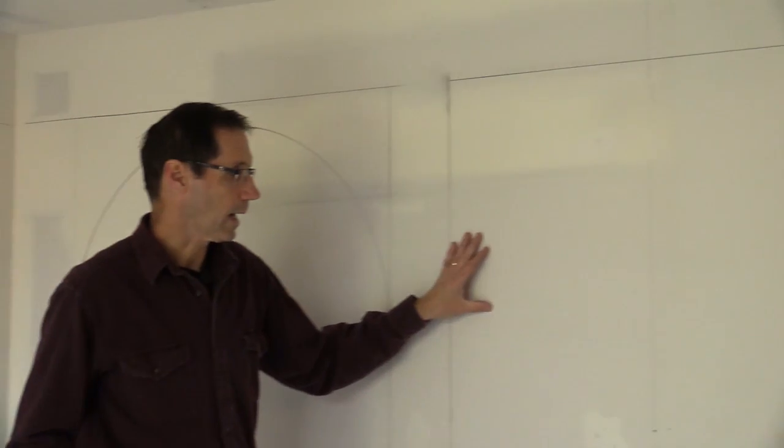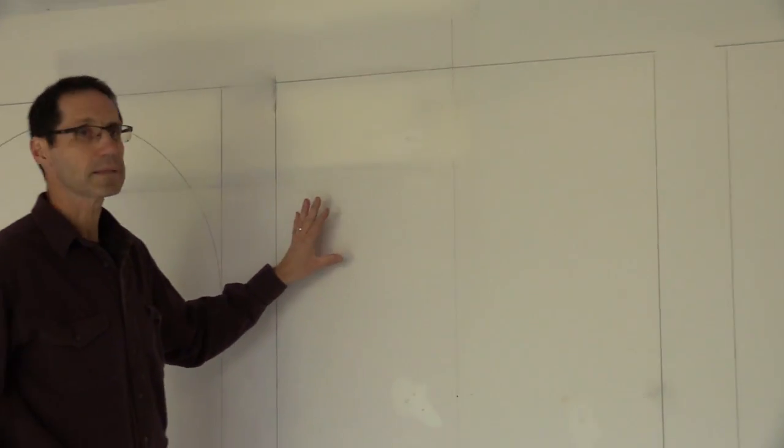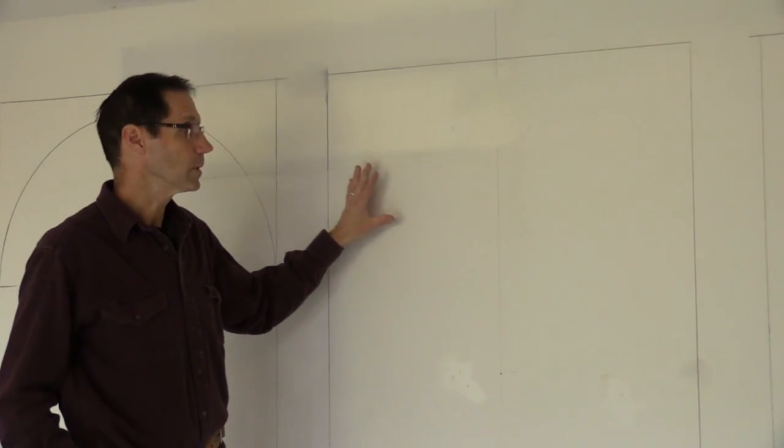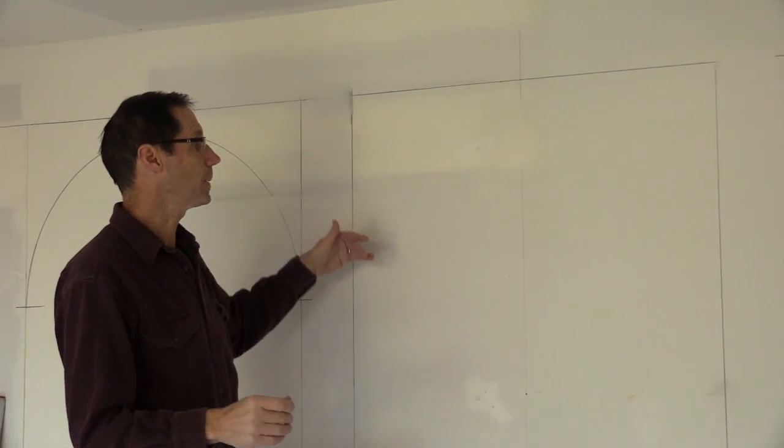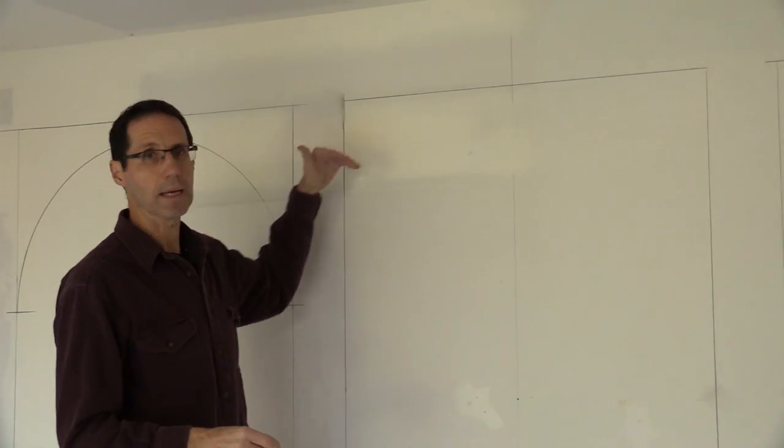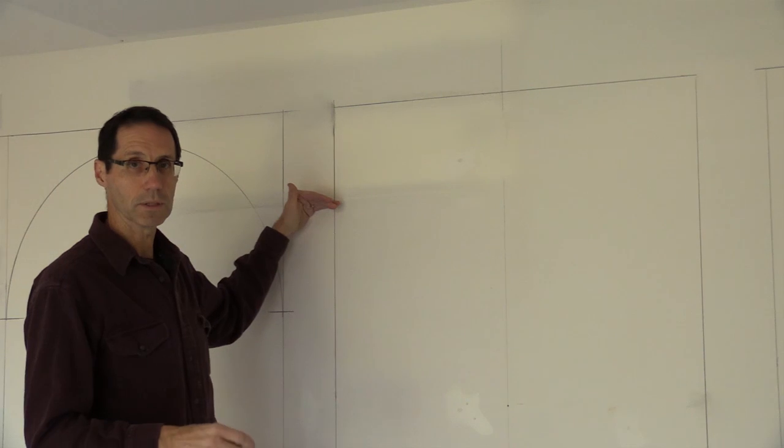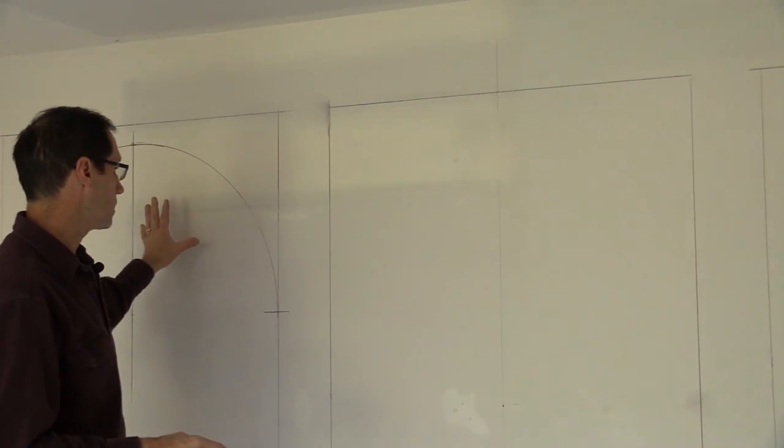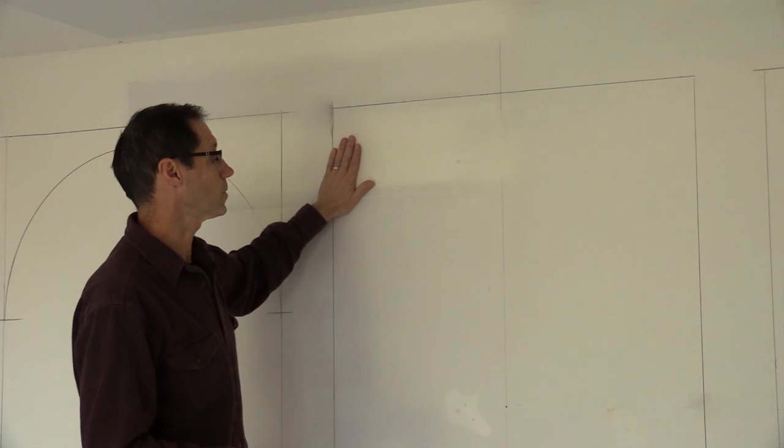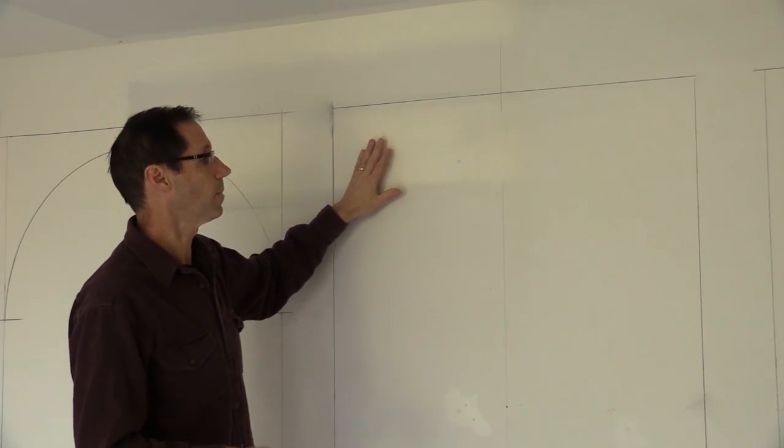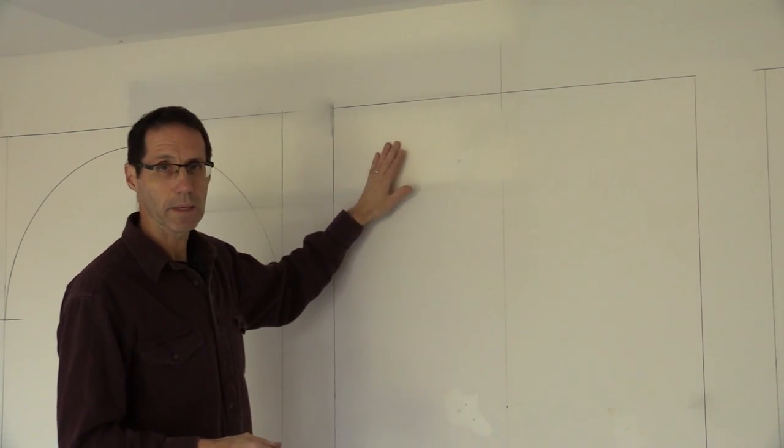The next arch that I'm going to lay out is going to be a segment arch. With a segment arch, no matter what width opening I have, I'll be able to keep the same height and the same spring line, which is important, as I just outlined with this radius arch. So this particular archway, I'm going to mark out as a segment arch.